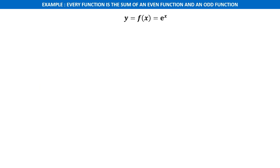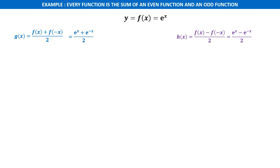For example, let f(x) = eˣ. This function is neither even nor odd, but we can easily split it into even and odd components. The even component g(x) equals f(x) plus f(−x) all divided by 2. By substituting f(x) = eˣ and f(−x) = e^(−x), we get the even component. Similarly, we can find the odd component of the given function.